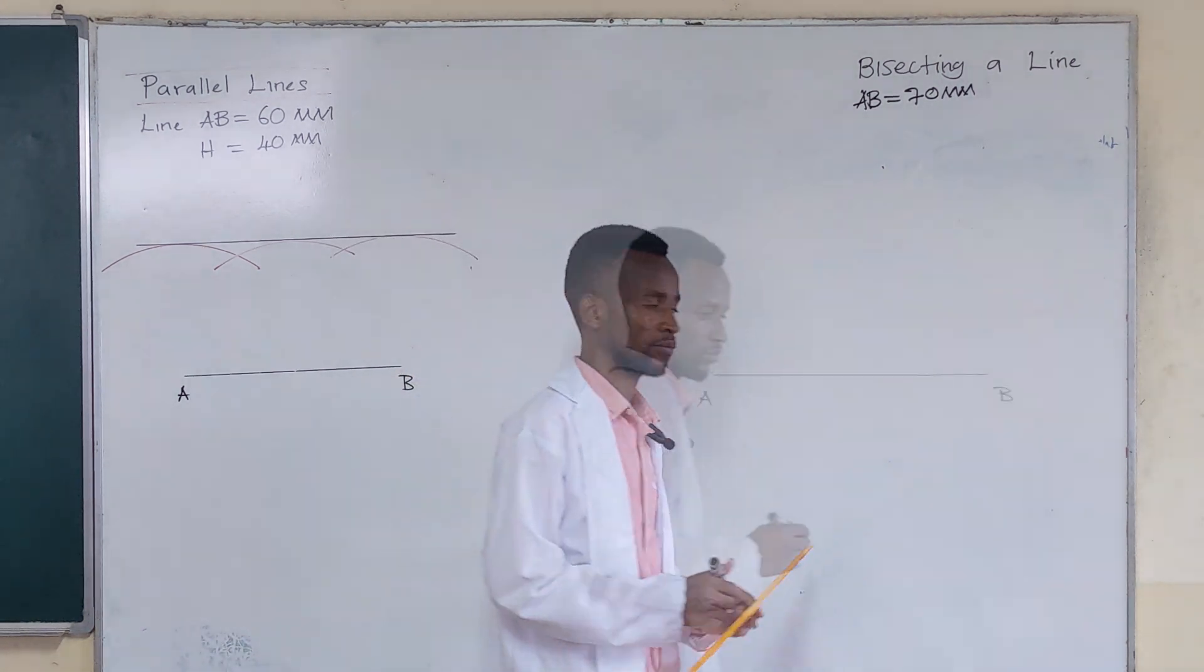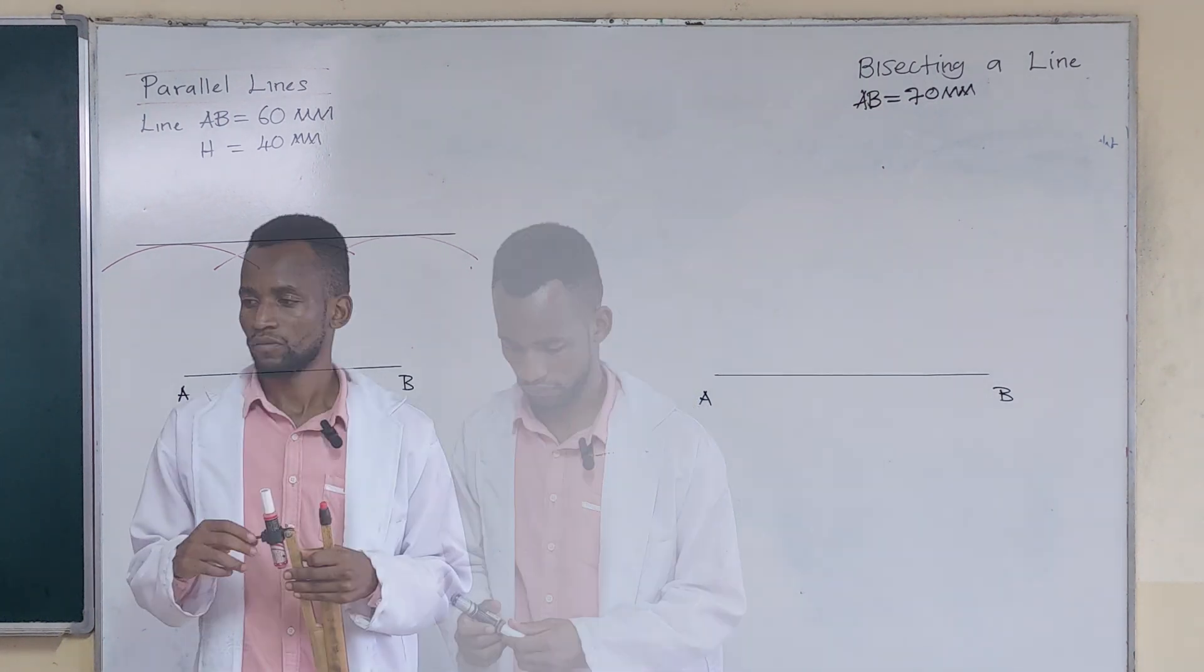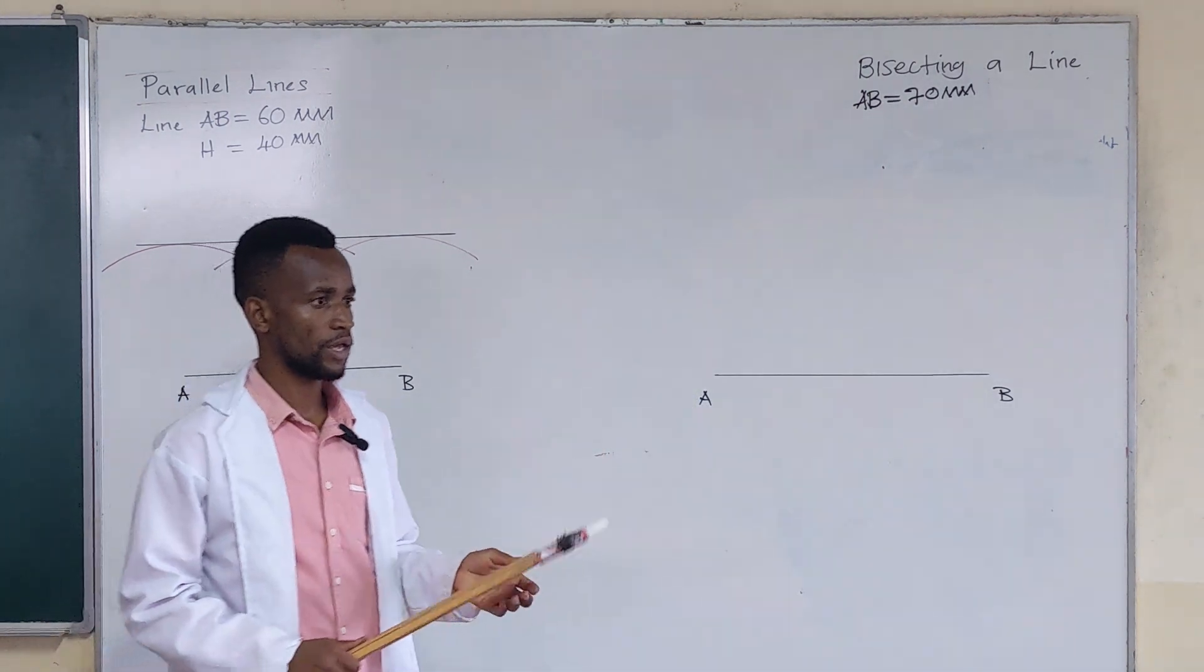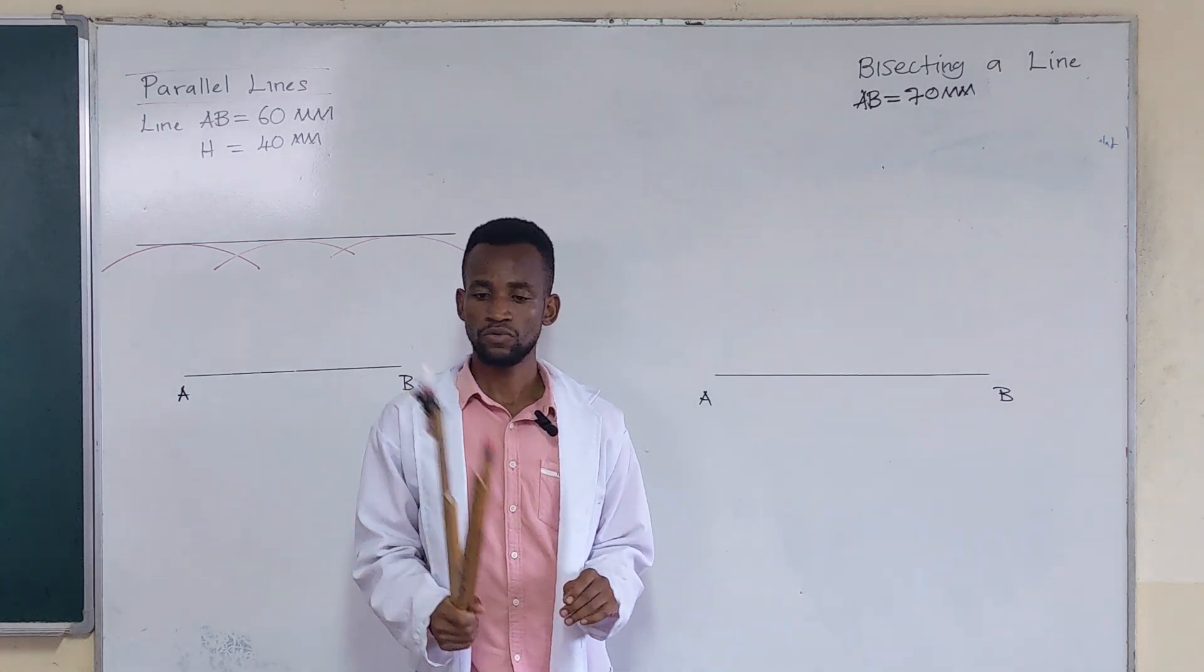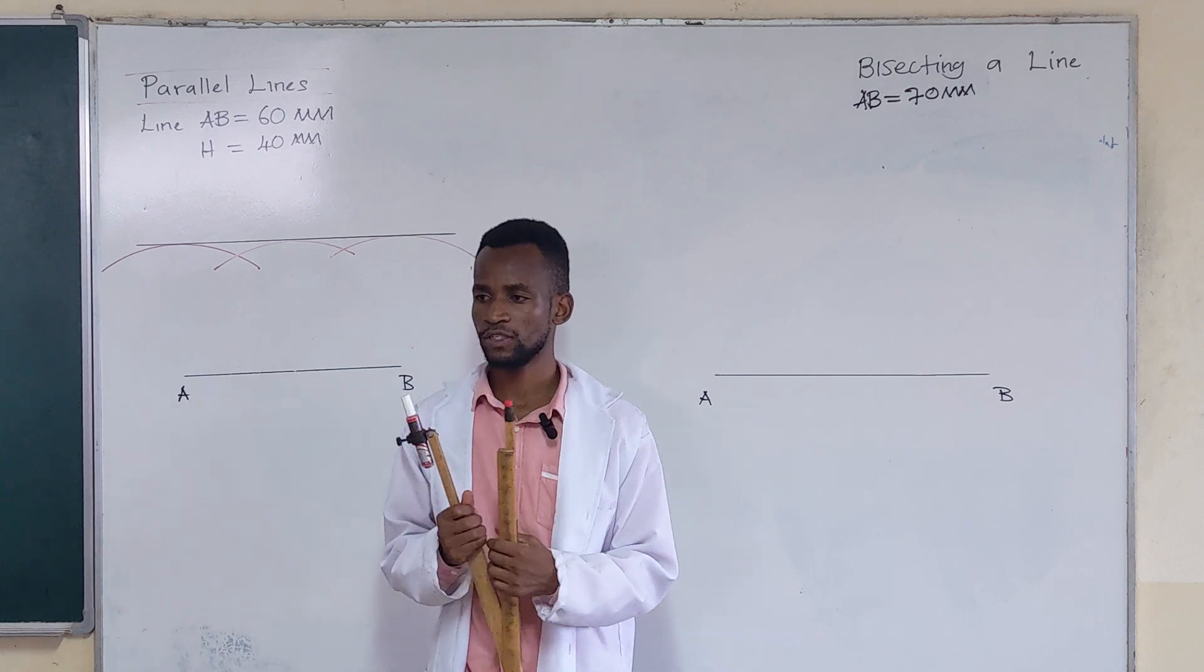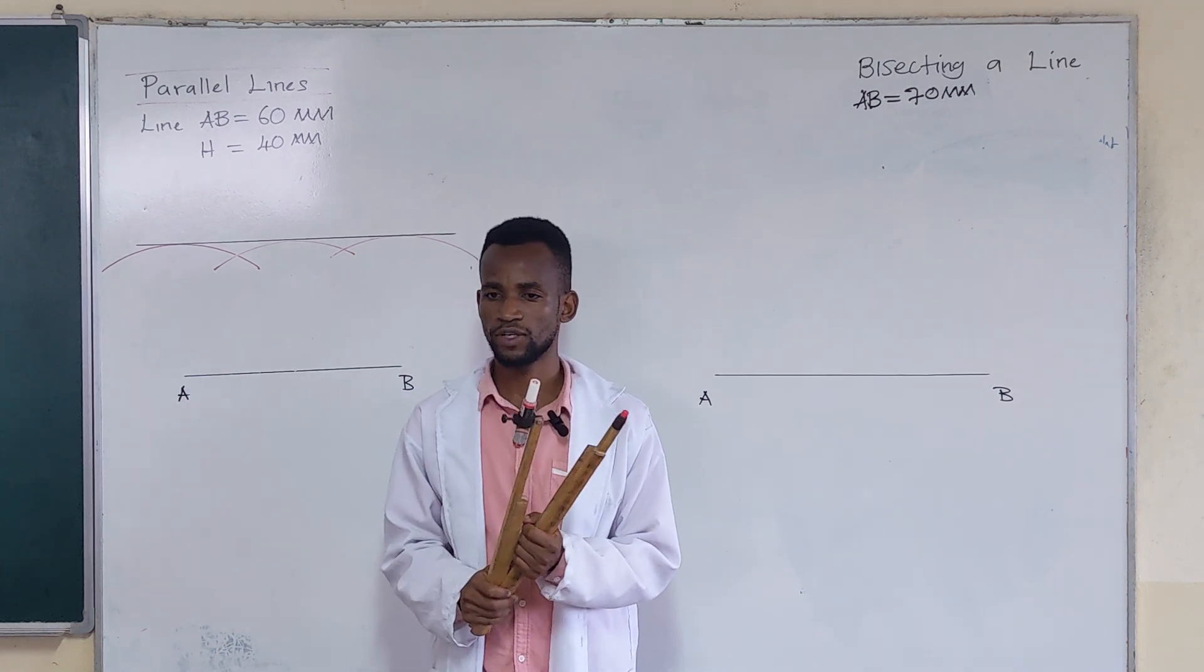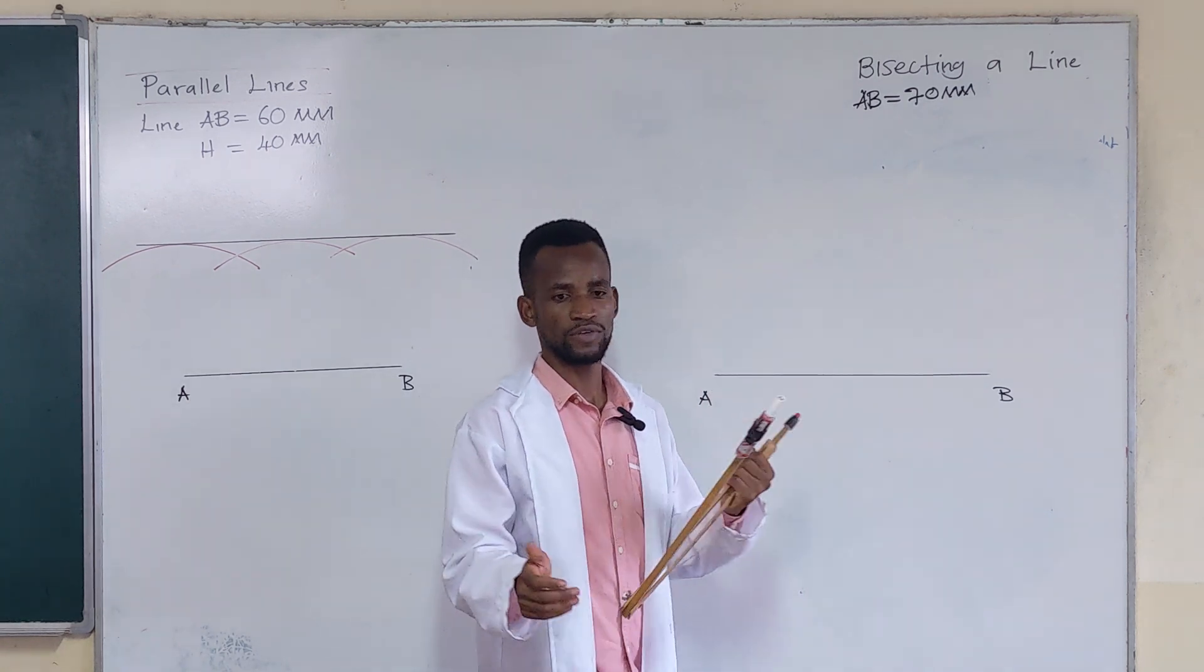So we draw line AB. The principle for bisecting any given line is you get your compass and open it to any convenient radius of your choice that is more than half of the given line. How do you know that it's more than half? You don't even have to measure.